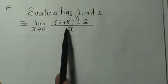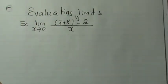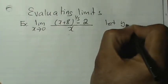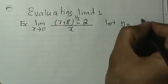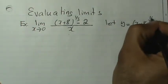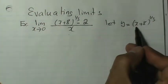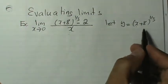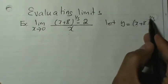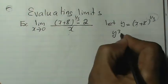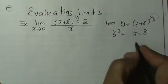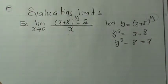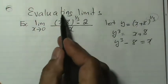Since it's a higher root than the square root, we use change of variable. What I mean is we let y represent the higher root here, which is going to be x plus 8 to the power of one-third. Then we isolate for x: cubing both sides gives y cubed equals x plus 8, so x equals y cubed minus 8. Now we can completely change the variable in this rational function.